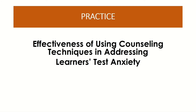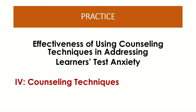Let's have another one: 'Effectiveness of using counseling techniques in addressing learner's test anxiety.' In this experiment, the researcher wants to use different kinds of counseling techniques to see if they can address, lessen, or decrease the test anxiety of the students. Which do you think is the independent variable? If your answer is counseling techniques, then you are correct. And our dependent variable is the test anxiety of the learners.